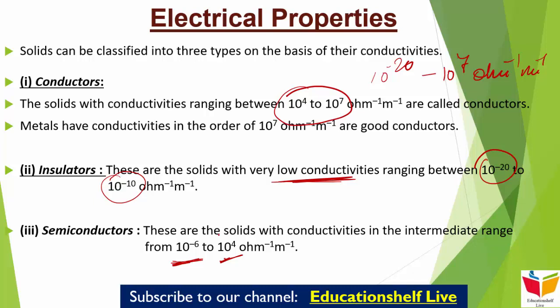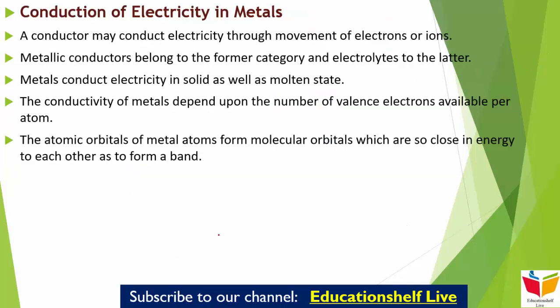अब हम पढ़ेंगे कि conduction होता है electricity का metals में, वो किस तरीके से होता है। एक conductor electricity conduct करता है electrons या ions के movement के through। जो metallic conductors होते हैं वो electrons वाली category को belong करते हैं, और जो electrolytes होते हैं वो ions वाली category को। Metallic conductors में electron का movement होता है जिसकी वजह से electricity conduct होती है, और electrolytes में ions का movement होता है।